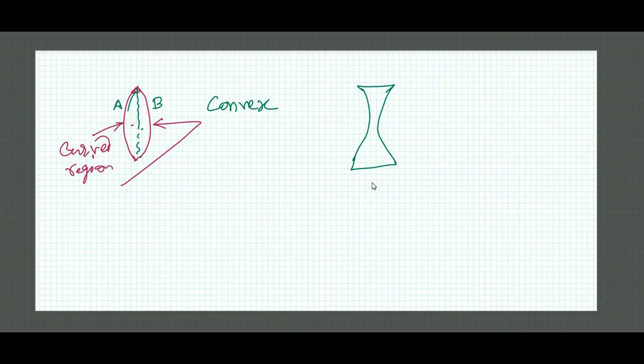We will get a concave lens. It is called concave lens and this one is called convex lens. Convex lens is bulged near the center.